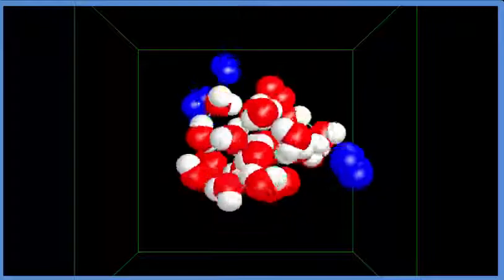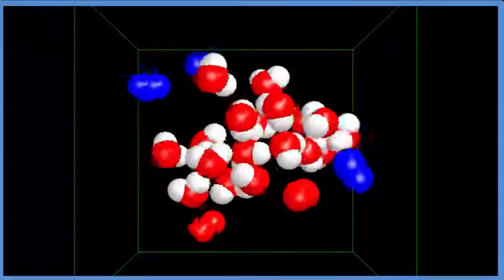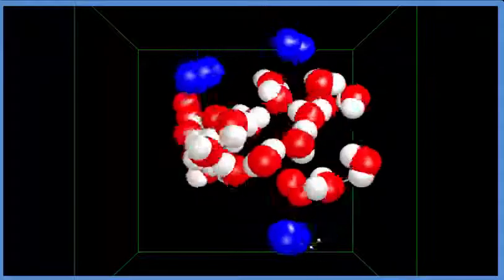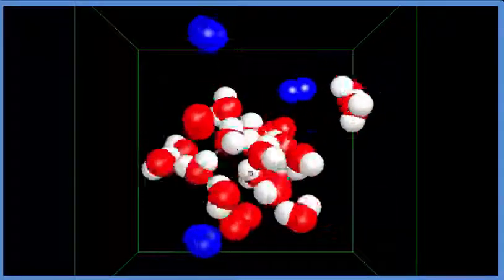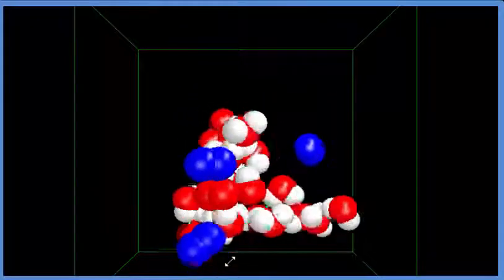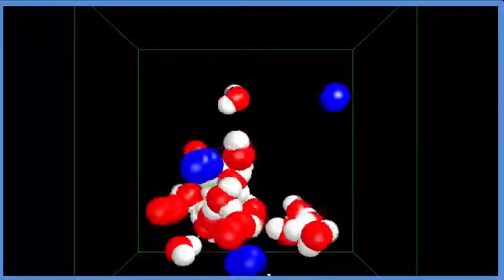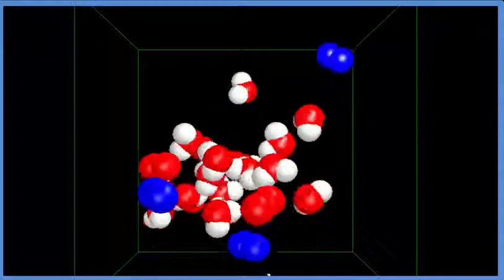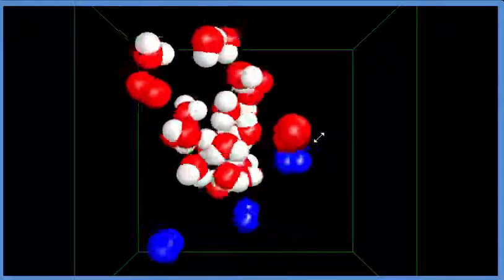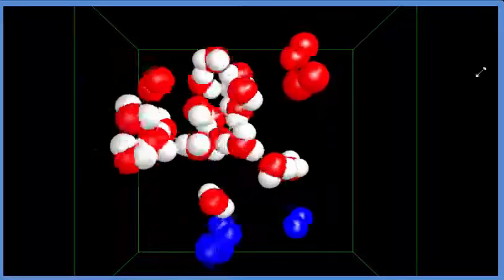So we're increasing the temperature. And you can see these nitrogen molecules and some of the oxygen molecules, they're no longer in the water. We're in a closed box, so they can't go far. But they get pushed out, many of them, when we increase the temperature. So as we increase the temperature, a gas, like oxygen or nitrogen, or air, the mixture of oxygen and nitrogen, is forced out.